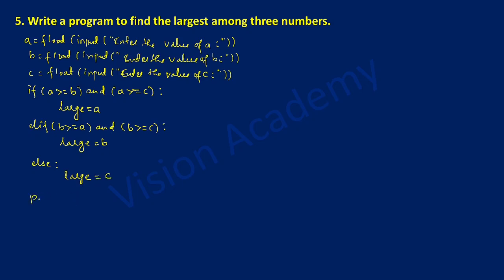Now we are going to write the print statement. I will write 'the largest number is equal to', end the double quotation mark, put a comma, and write large, then close the bracket. Now let us check out the output.